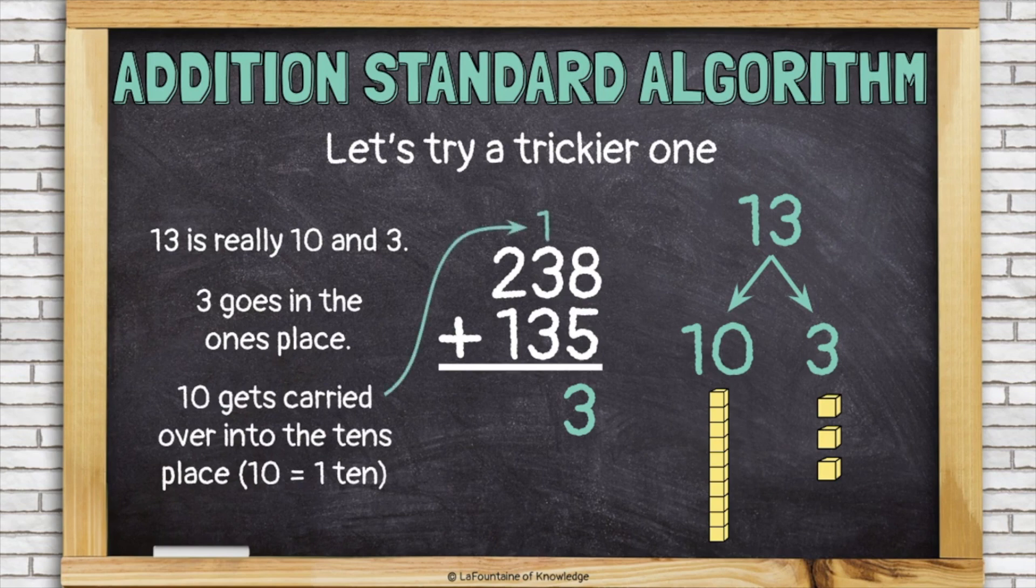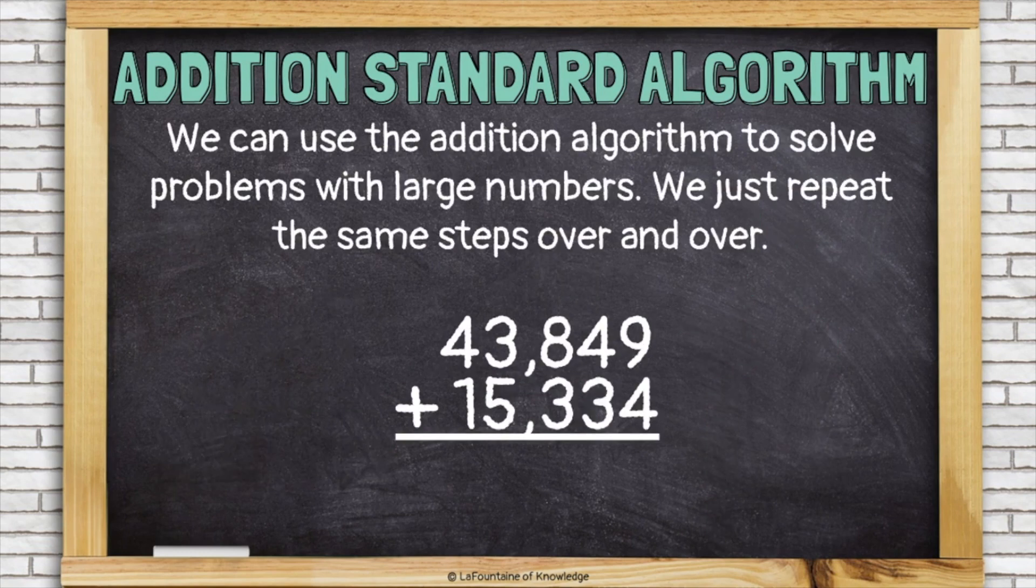Now I'll add all the tens together. Now I have one ten, three tens, and another three tens, which is seven tens. And finally I'll add the hundreds. 2 plus 1 is 3.